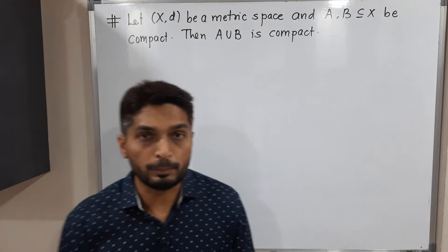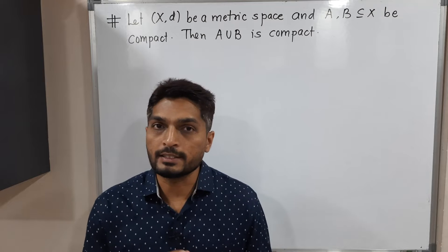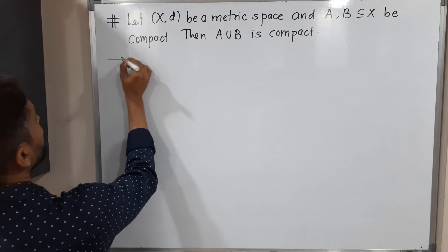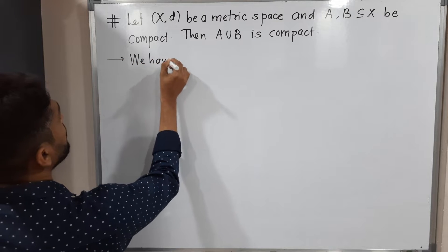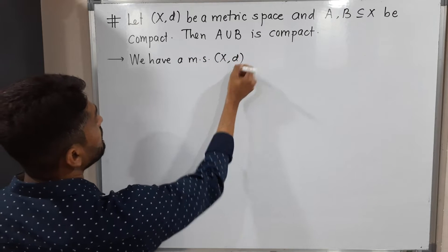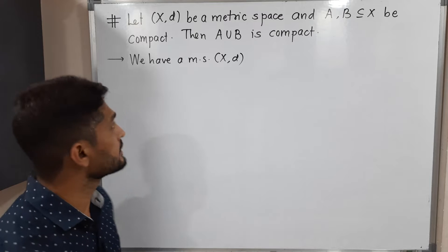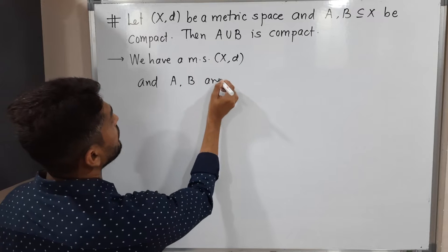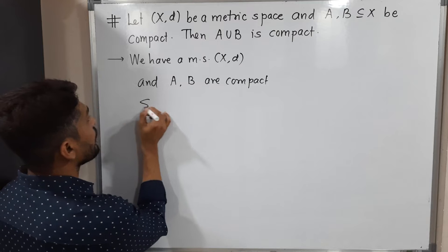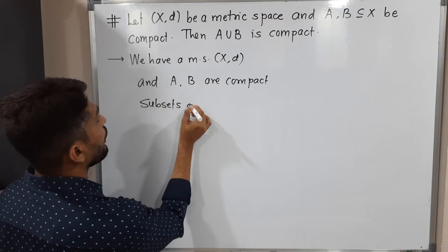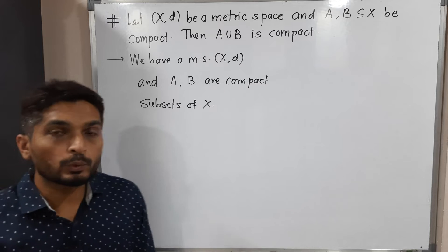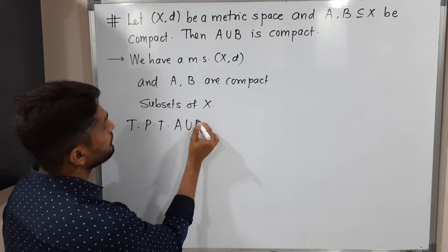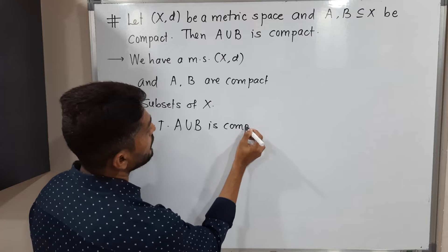Hi everyone. In this video we are going to prove: if you have two compact sets, then their union is also compact. We have a metric space (X, d), and we are given A and B as any compact subsets of X. What we have to prove is that their union A∪B is also compact.